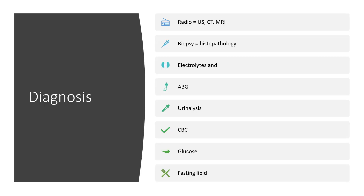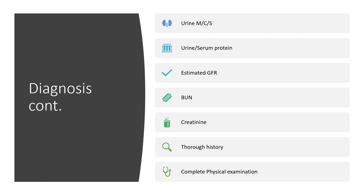A3 corresponds to end-stage renal disease. After staging, move to identify the exact cause using radiological investigations such as ultrasound, CT, or MRI. You can also perform biopsy with histopathological investigation, electrolytes, arterial blood gases, complete blood count, glucose, fasting lipid panel, urine microscopy, culture and sensitivity, urine and serum protein, estimated GFR, 24-hour urine protein, blood urea nitrogen, creatinine, full history, and complete physical examination.